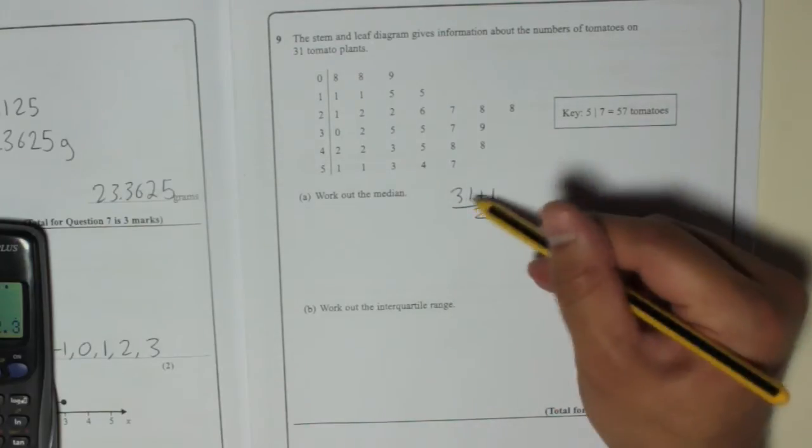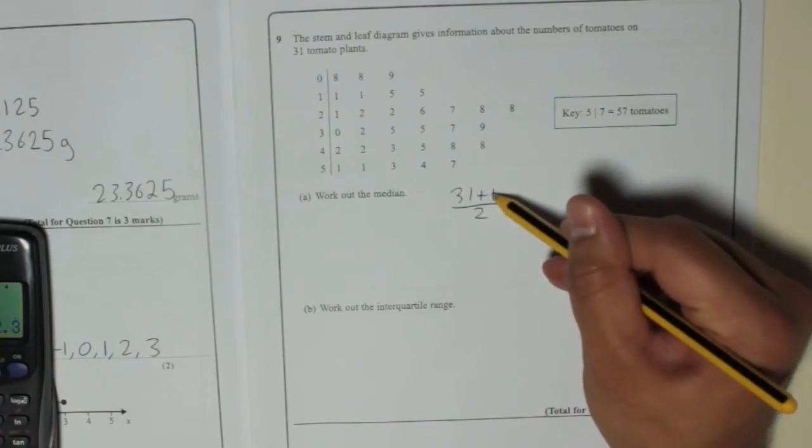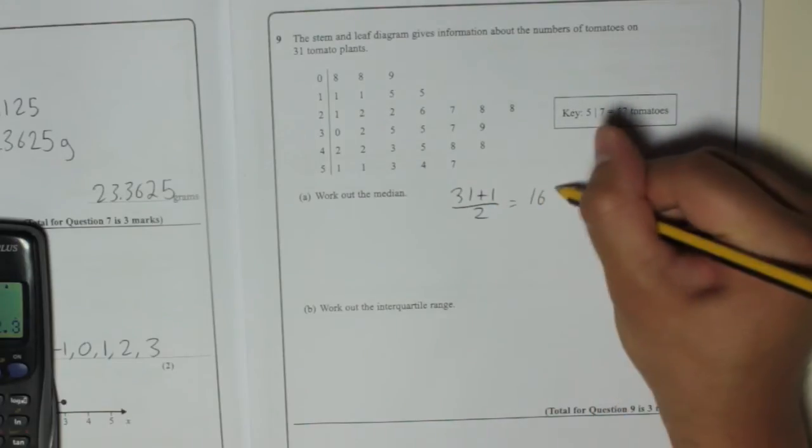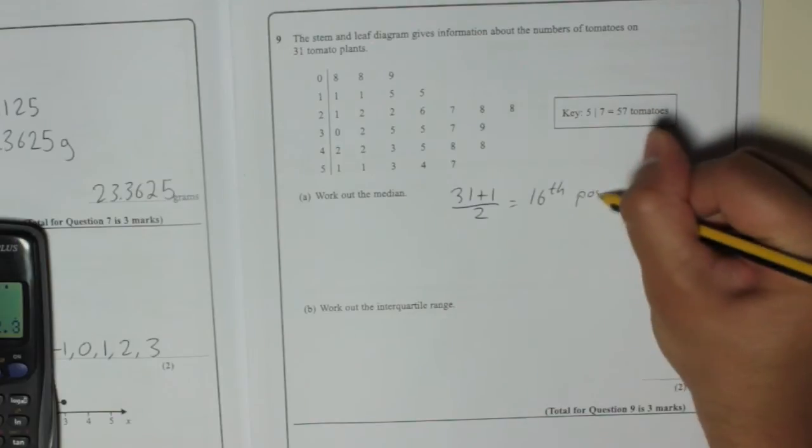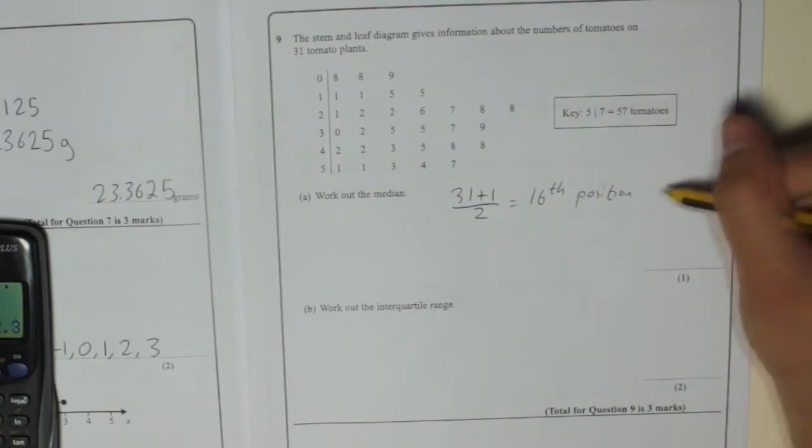So 31 plus 1 is 32. Divide that by 2 is 16th position. That's where the median is.